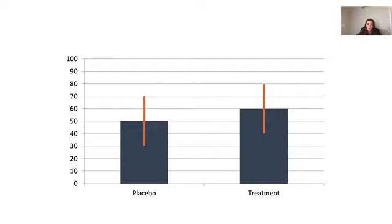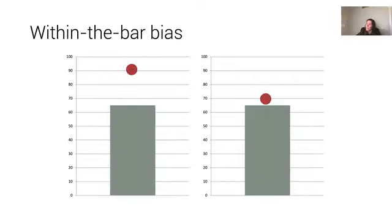And so, one of the tricks that emerges when we're putting bar charts on these error bars is that people tend to think that values that occur within the confounds of the bar actually are more likely. This is what's called the within-the-bar bias.